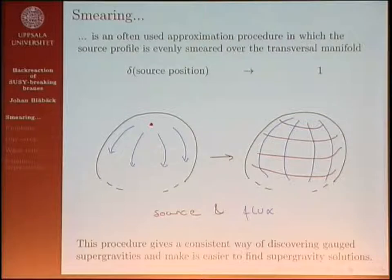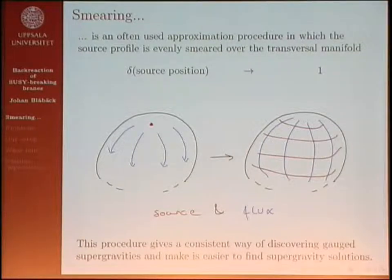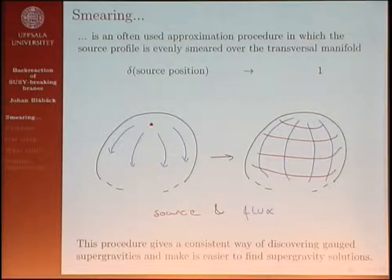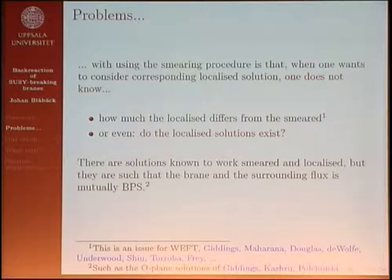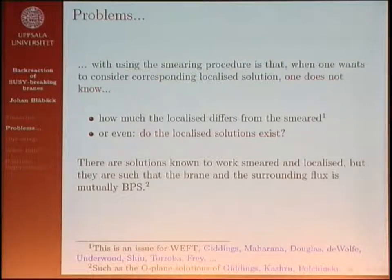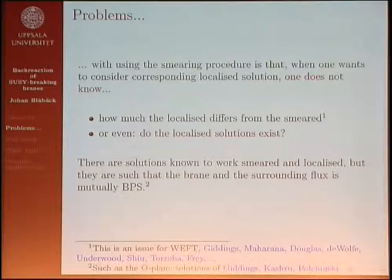Instead of having a delta function specifying the source position, you replace it by a constant that integrates to the same thing. You can see in this picture we have a point in one case — localized — and smeared in the other. This procedure is a consistent way to discover gauged supergravities and makes it easier to find supergravity solutions. Problems arise when one wants to find the corresponding localized solution, as one does not know how much it differs from the smeared one. One does not even know if the localized solution exists even if there is a smeared solution.